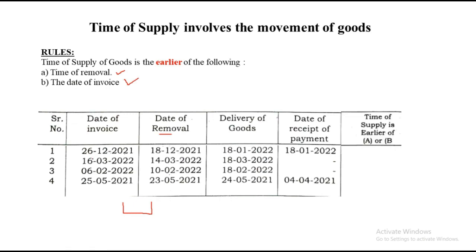So 26th December and 18th December — 18th is the earlier date, so time of supply is 18th December. 16th March and 14th March — 14th March is earlier. 6th February and 10th February — 6th February is earlier. 25th May and 23rd May — 23rd is earlier, so we note down 23rd May as the time of supply. Again very simple — just follow the rules and note down the date. There is no calculation; it is purely based on identifying the type of sum and following those rules. That was the third type: when there is movement of goods.